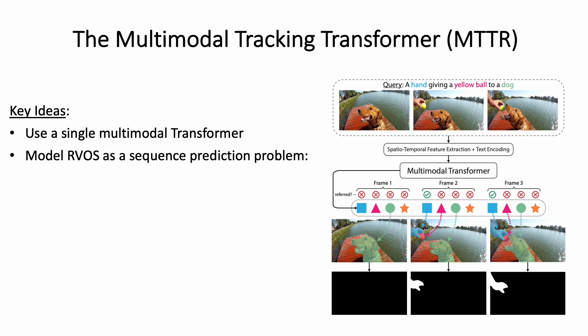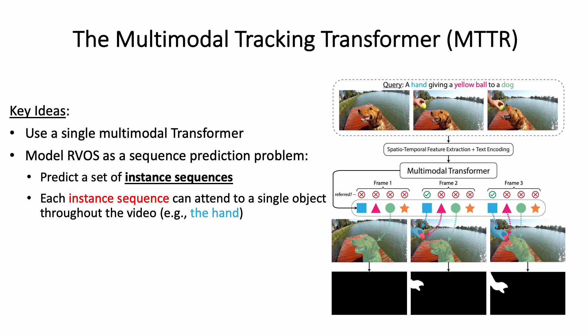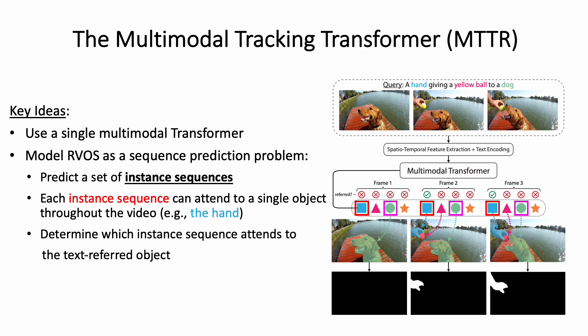To accomplish this, we employ a single multimodal transformer and model the task as a sequence prediction problem. Given a video and a text query, our model generates a set of instance sequences for all objects in the video. Each instance sequence is a sequence of embeddings that can attend to a single object throughout the video. In this example, the sequence of blue rectangles attends to the hand, while the sequence of green circles attends to the dog. Finally, the model determines which instance sequence attends to the text-referred object and returns a sequence of segmentation masks that corresponds to it.